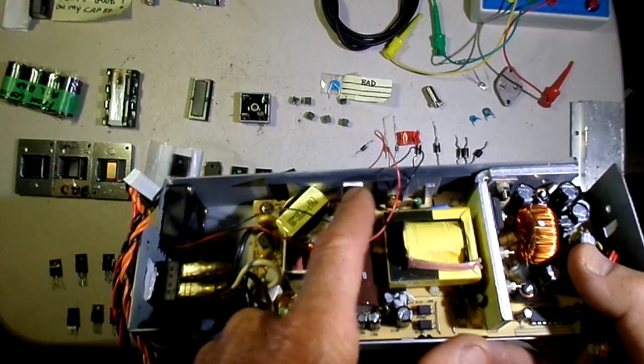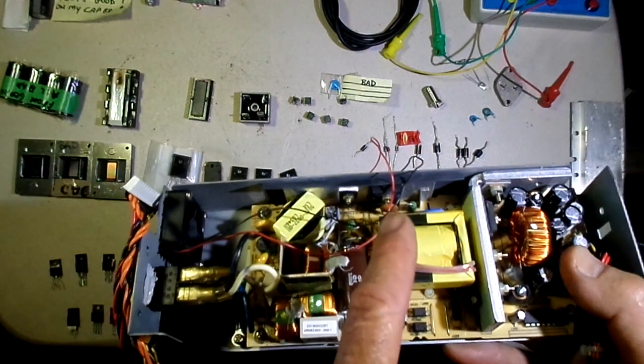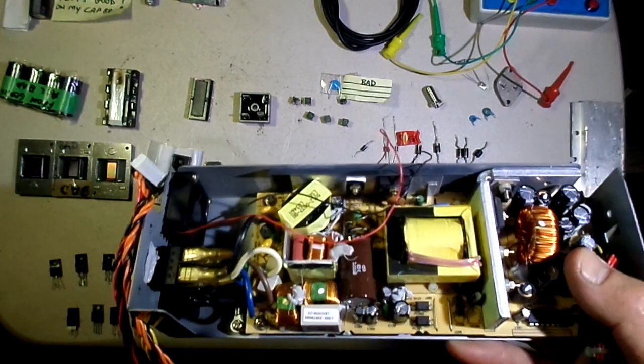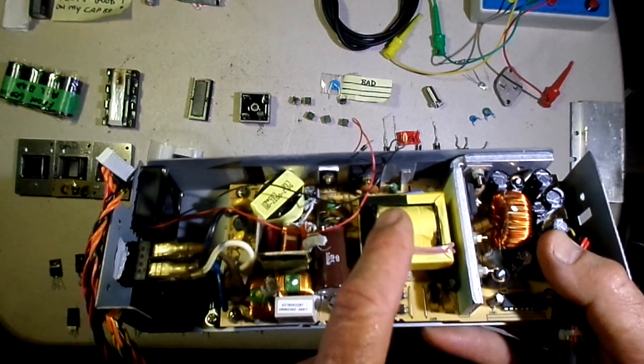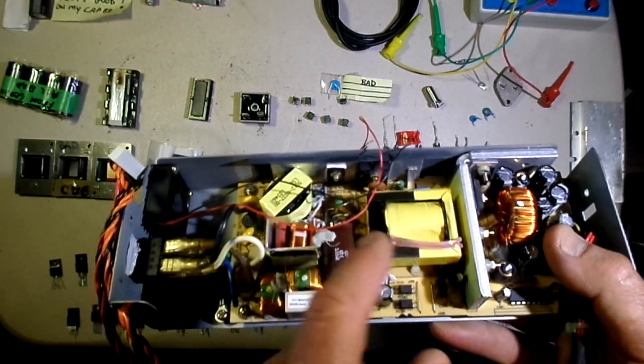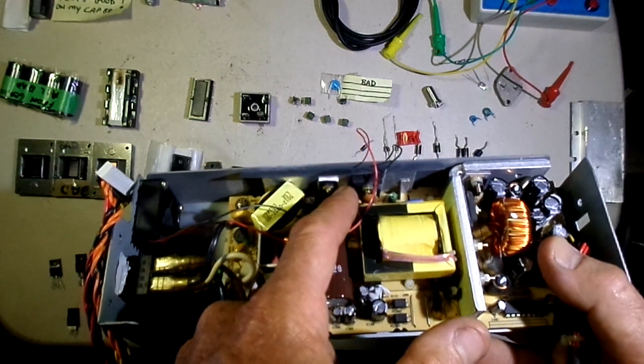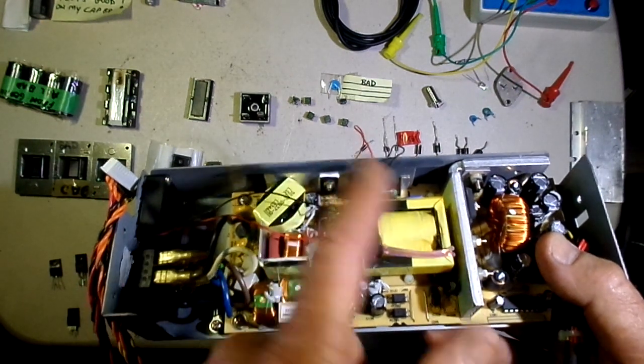A lot of these transistors are used to dump power into the transformer. If you know anything about transformers, you know that they won't pass DC so it has to be pulsed. When these transistors are pulsing the power into the transformer, they're working awful hard and that's why they often fail.